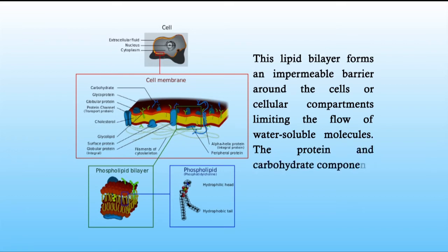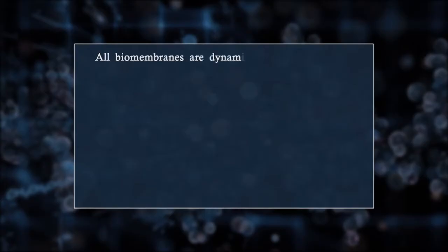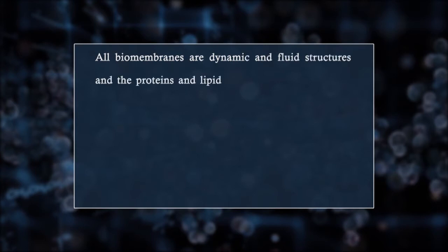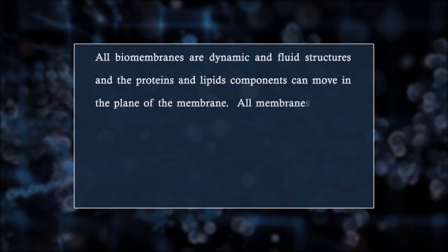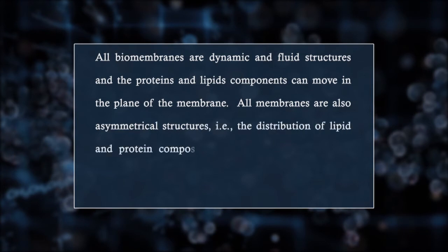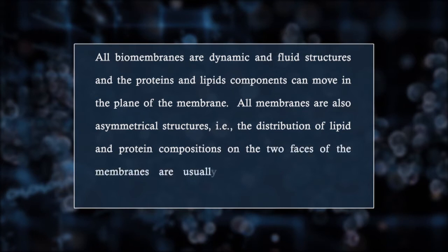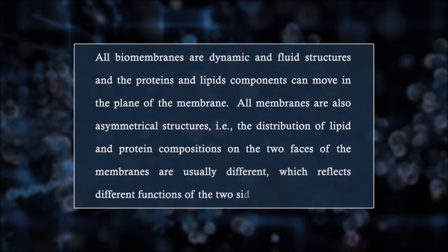The protein and carbohydrate components are distributed in the lipid bilayer. All biomembranes are dynamic and fluid structures, and the proteins and lipid components can move in the plane of the membrane. All membranes are also asymmetrical structures — that is, the distribution of lipid and protein compositions on the two faces of the membranes are usually different, which reflects different functions of the two sides.